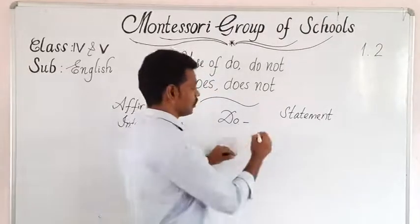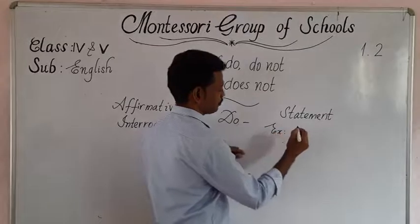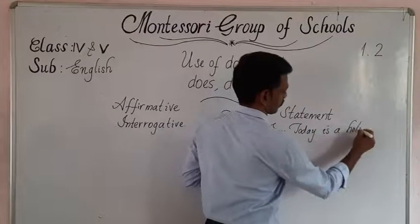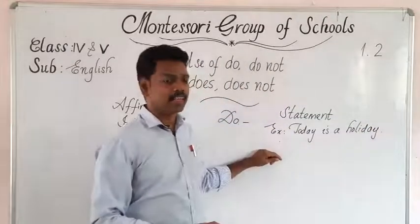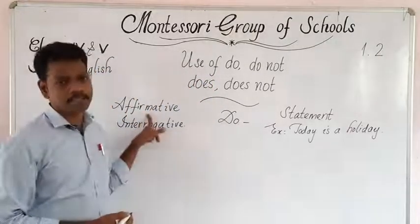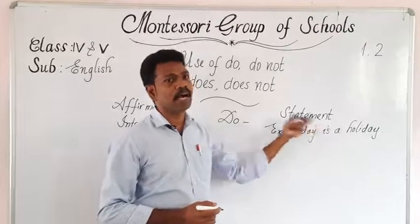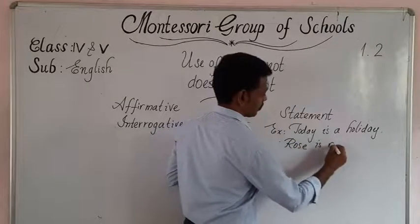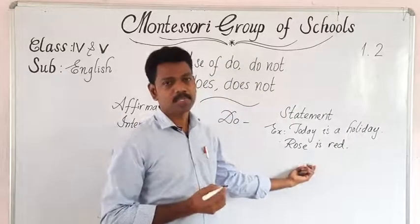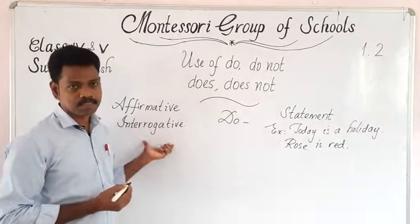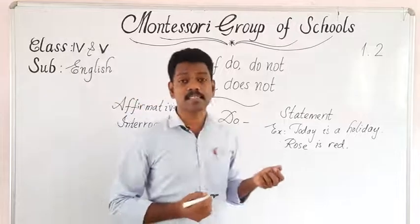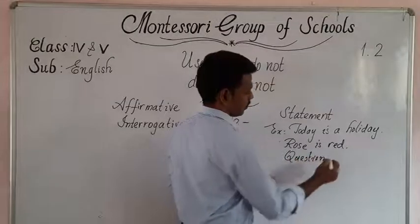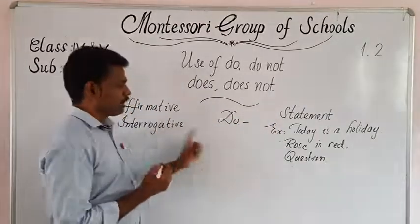Let me write examples on the board. For statement, example: today is a holiday — that is an affirmative sentence. The sentence which gives us a statement is called affirmative. Another example: rose is red. Now the next type is interrogative. What is interrogative? The sentence which asks a question — that is called an interrogative sentence. Affirmative makes statements; interrogative gives questions.